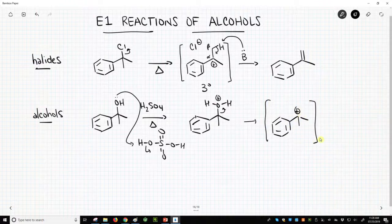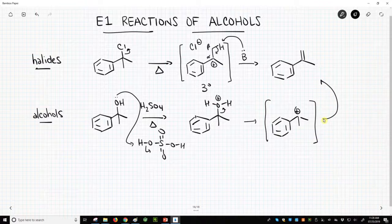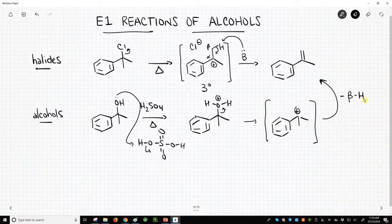Our carbocation intermediate, and this will lose a beta-hydrogen. I'm just going to write minus a beta-hydrogen. That is not a mechanism, but that's what happens, and it happens just as we showed up here with the halide reaction.